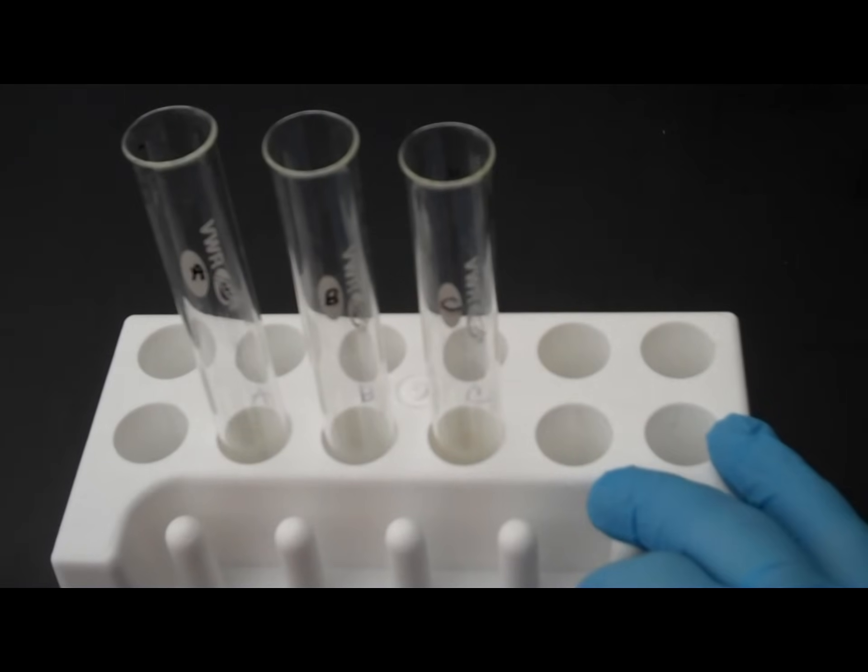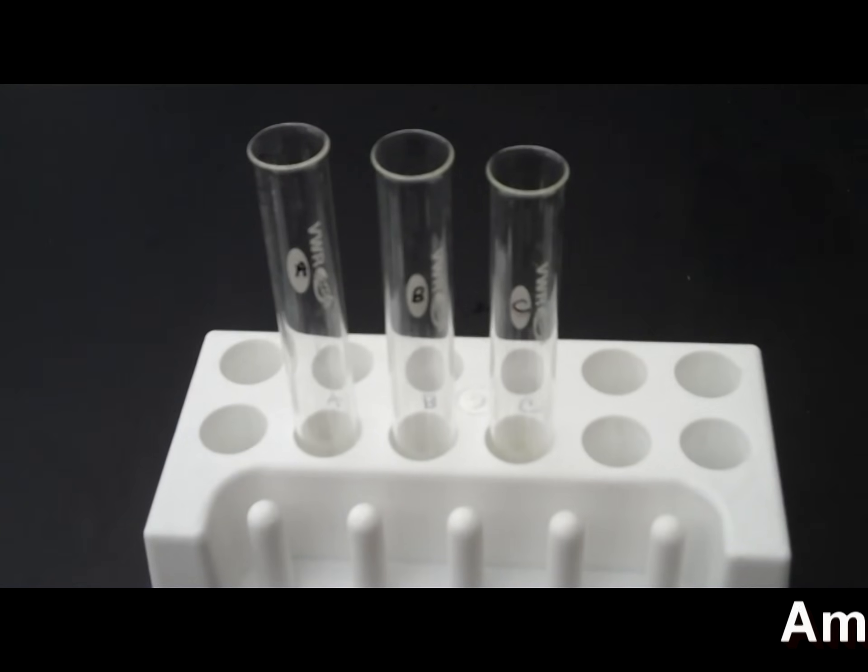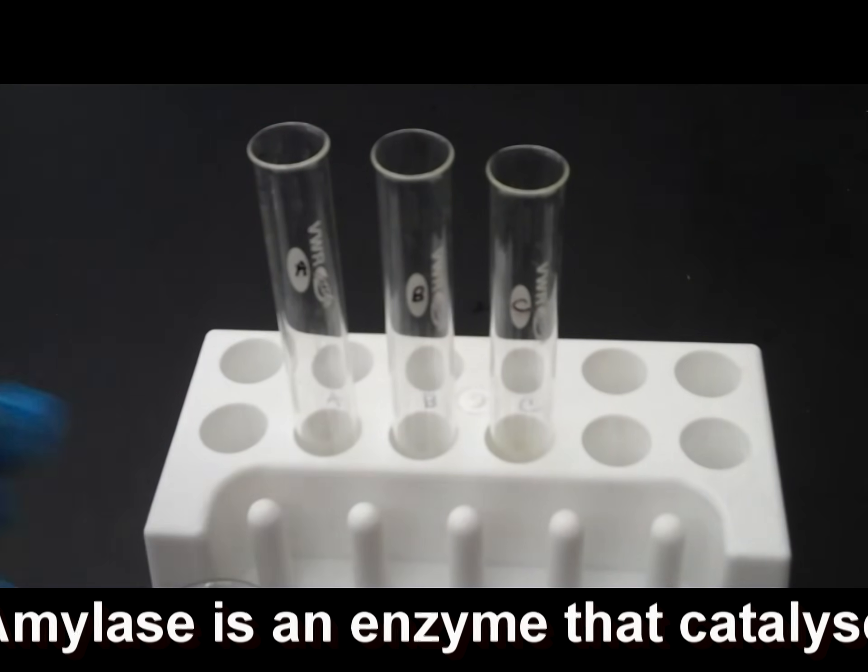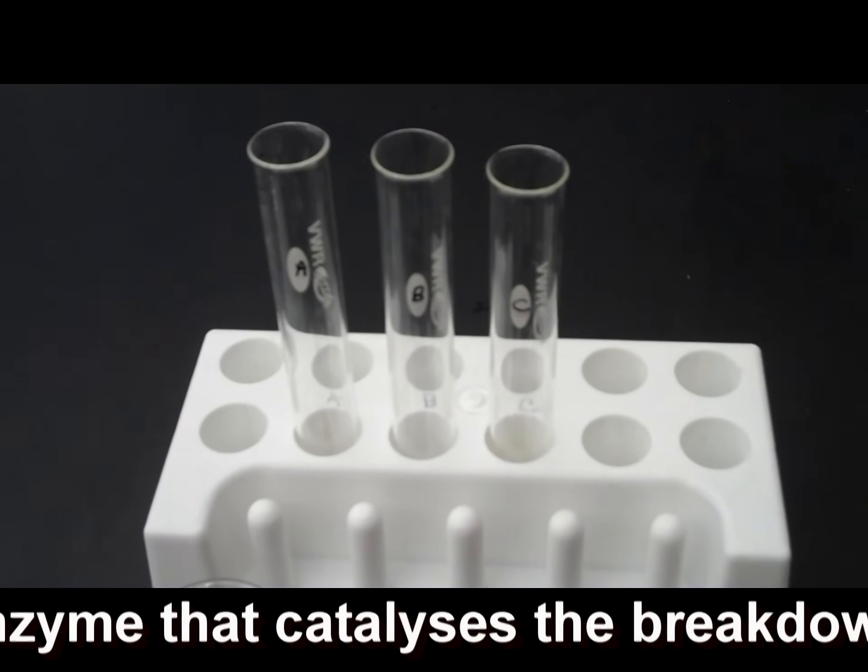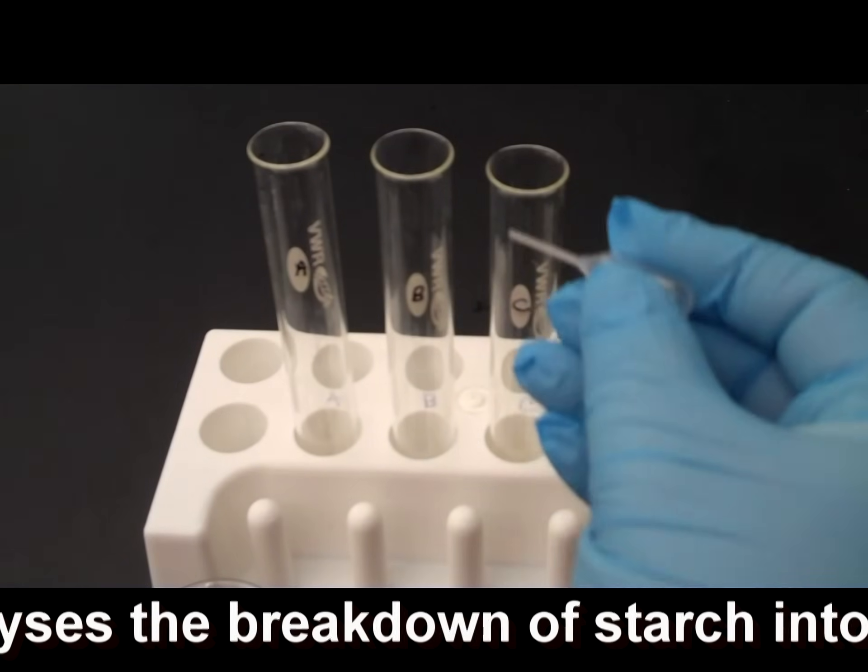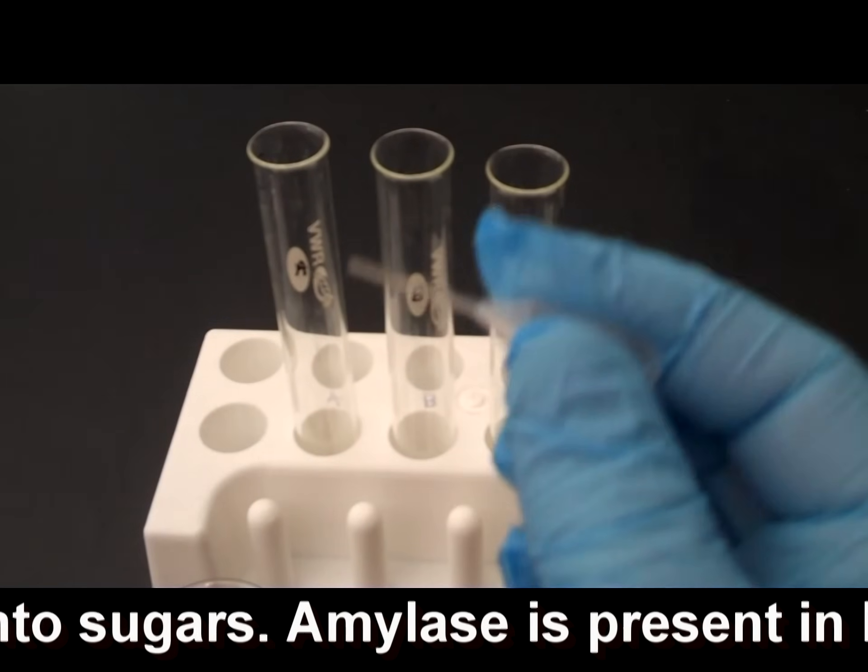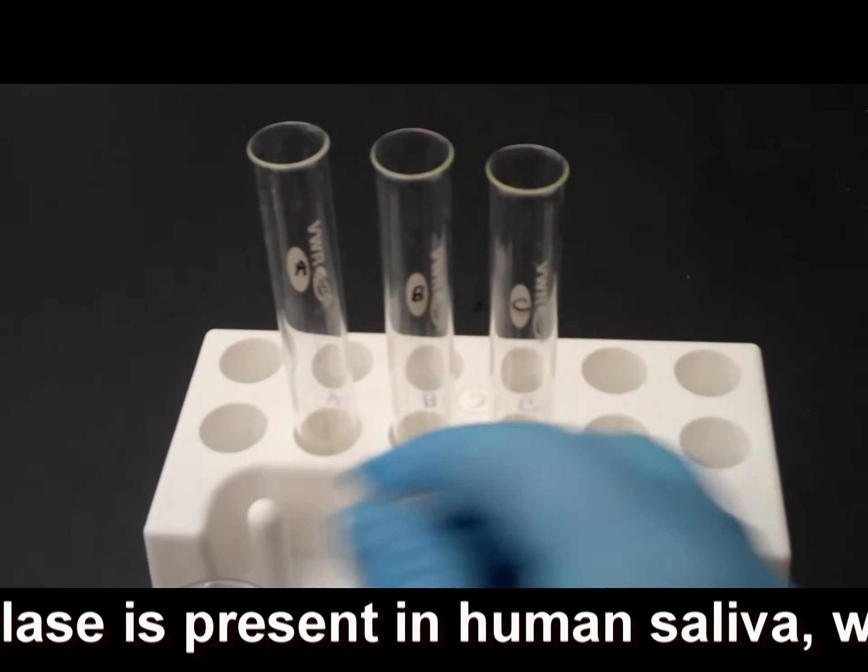So, I've got test tubes A, B, and C. And what I'm going to be testing today is what environmental factors affect enzyme activity. I'm going to start with my enzyme amylase, and I'm going to put two milliliters in each test tube. Since this is half a mil, I'm going to need four squirts in each test tube.